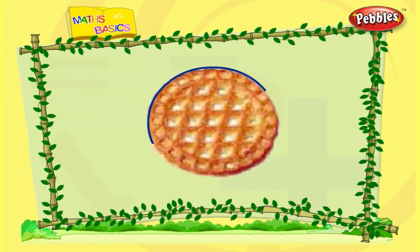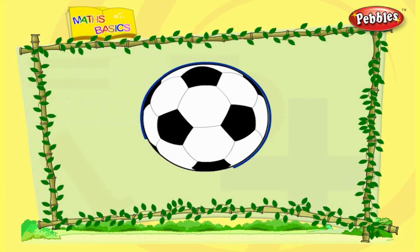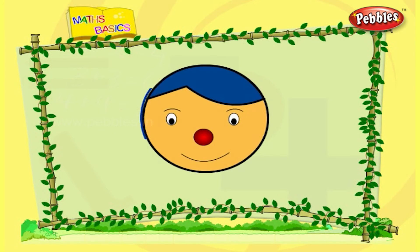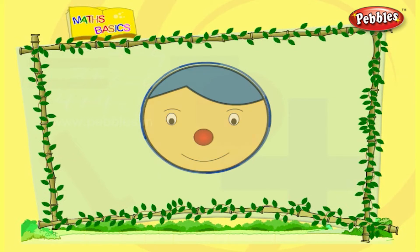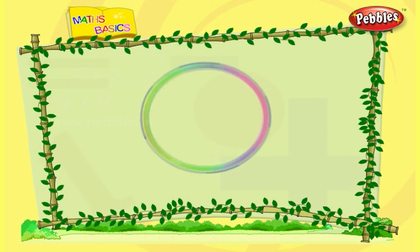A biscuit. A ball. Can you identify some objects in circular shape? Face. Bangle. Plate.